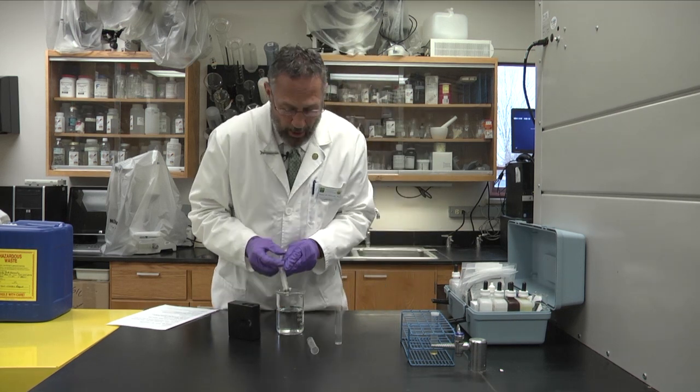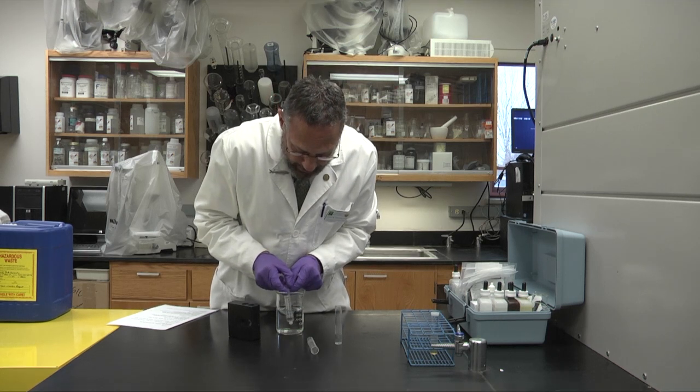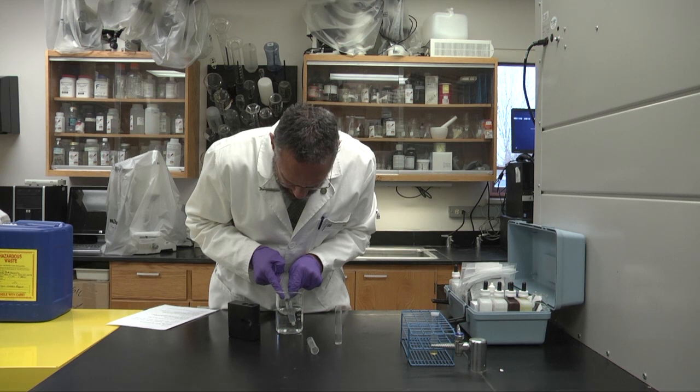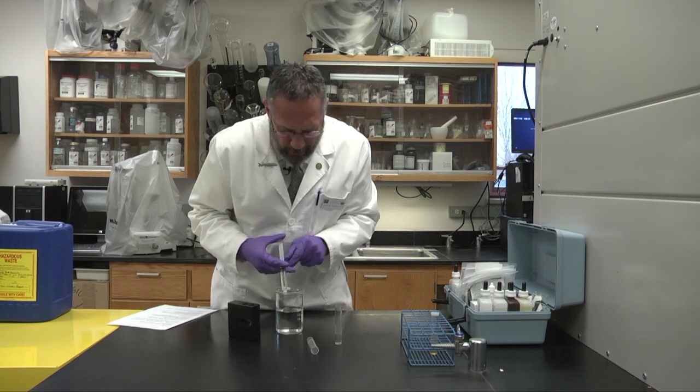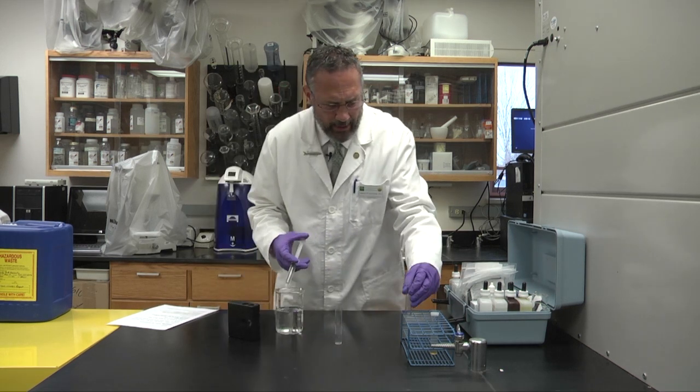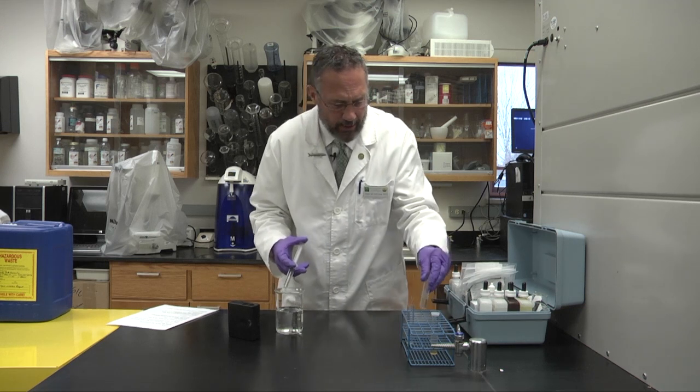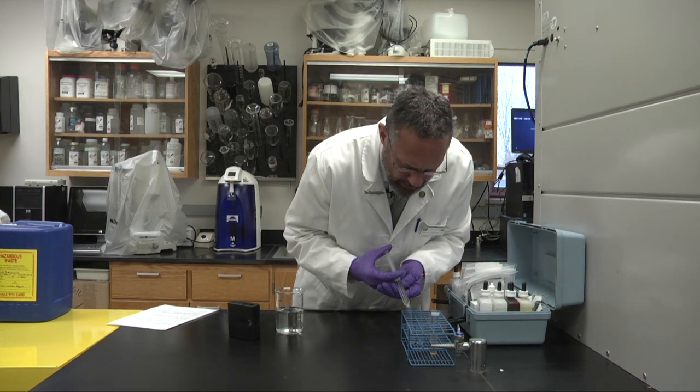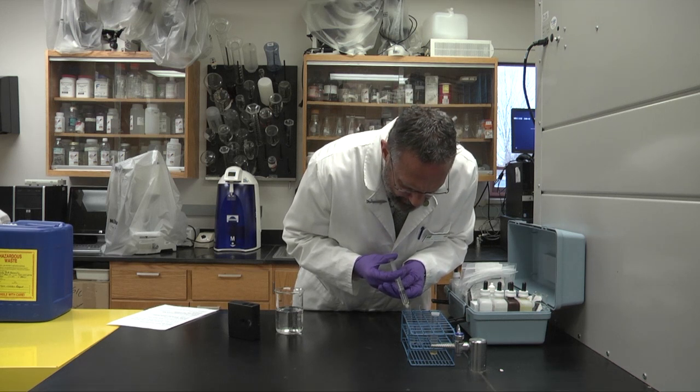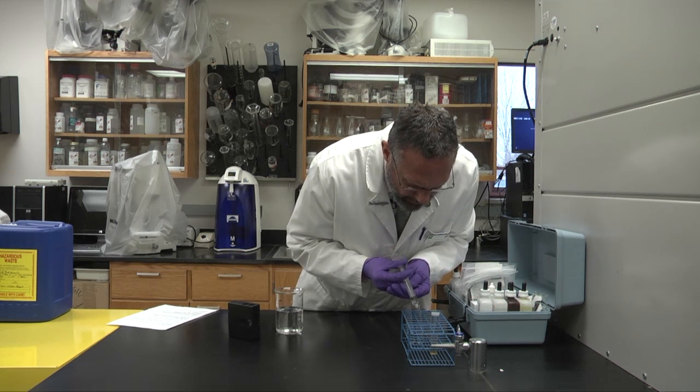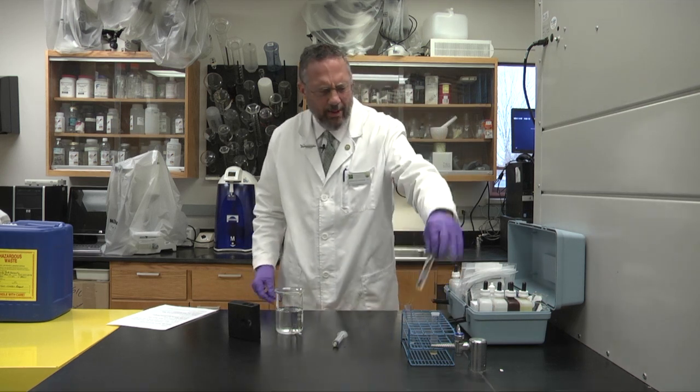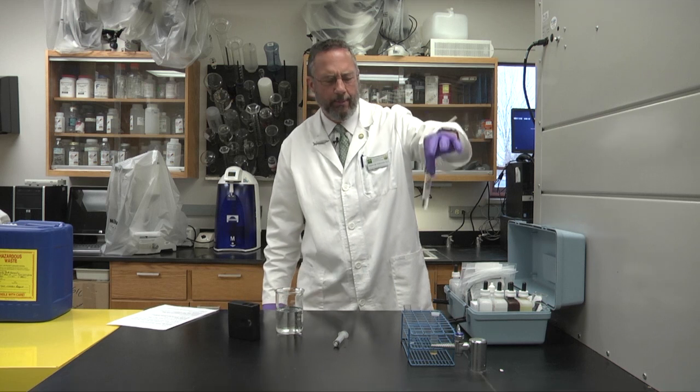So when we're filling these tubes, we'll fill the syringe up to ten cc's or ten milliliters. Put them in the test tube rack here and we'll put five cc's or five milliliters in one tube and five cc's in the other tube, and one of the tubes we won't add anything to. We'll leave it blank.